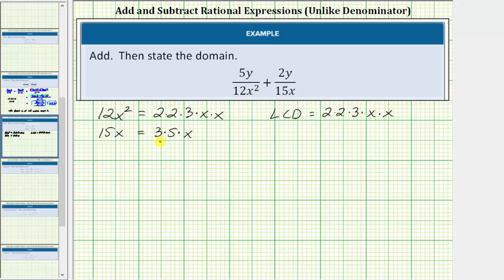And now looking at the second denominator, let's see if any of these factors are missing from the LCD. Notice we already have a factor of 3. We also have a factor of x. But we don't have a factor of 5 listed in the LCD. Which means we need a factor of 5 in the LCD.